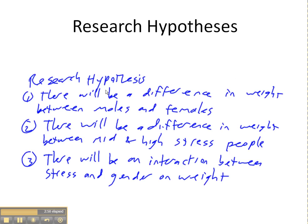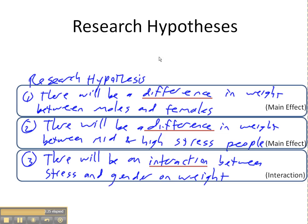The research hypotheses are: there will be a difference in weight between males and females; there will be a difference in weight between mid- and high-level stress people; and there will be an interaction between stress and gender in their effect on weight. Notice these are 2-tail hypotheses — with ANOVA you always get a 2-tail analysis, meaning you can only say there will be a difference, not predict the direction. For the interaction, the research hypothesis is simply that there will be an interaction. These correspond to a main effect of gender, a main effect of stress level, and an interaction between the two factors.